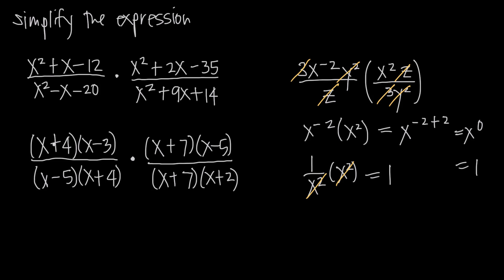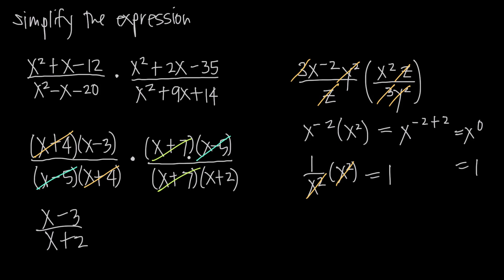Looking within each fraction, we have x plus 4 in the numerator and x plus 4 in the denominator of the first fraction — those cancel. In the second fraction, x plus 7 over x plus 7 cancels. Then looking between fractions, we have x minus 5 in the denominator of the first fraction and x minus 5 in the numerator of the second fraction — those cancel too. All that's left is x minus 3 in the numerator and x plus 2 in the denominator, giving us a final answer of x minus 3 over x plus 2. That was much faster than multiplying through without factoring first.